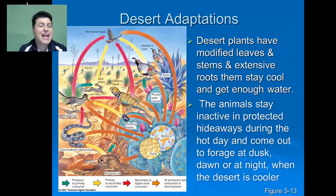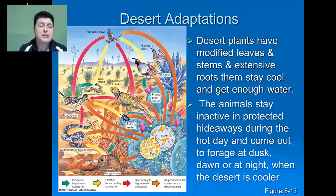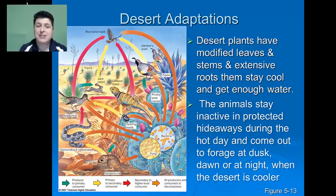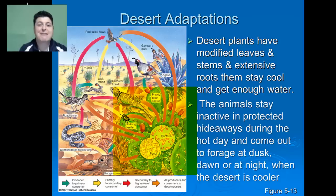In order to live in these areas with such little precipitation, there need to be specific adaptations for life. Desert plants will have modified leaves and stems to be able to prevent water loss. They also oftentimes will have modified photosynthesis.